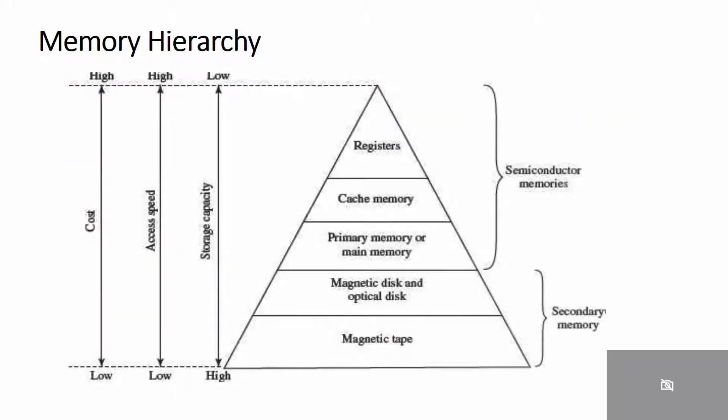Now moving to the next slide: memory hierarchy. The memory hierarchy is based on two key factors: capacity and access time. You will see this in the figure on the left side. Capacity is the amount of information in bits that a memory can store. Access time is the time interval between read and write requests and the availability of data.